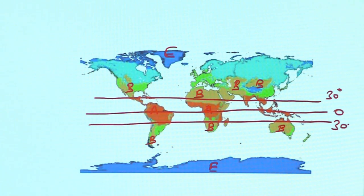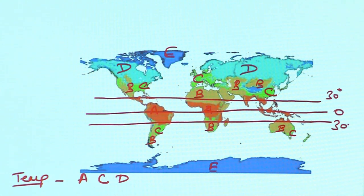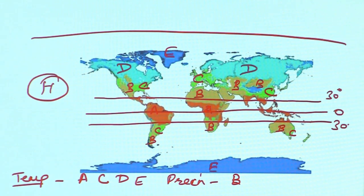C-type subtropical climate is shown in green — visible in Argentina, Brazil, Southeast Australia, China, and Europe. D-type climate is the taiga forest belt, visible in Siberia and northern Canada. Temperature-based categories include A, C, D, and E. B-type is precipitation-based. H-type is altitude-based, found wherever mountains are present.